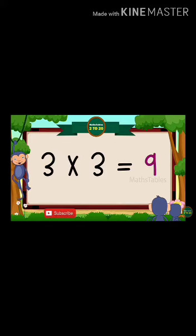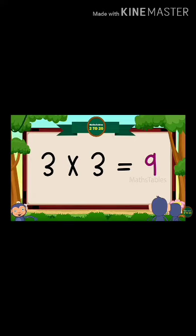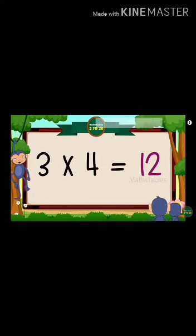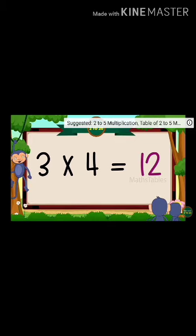Three threes are nine. Three threes are nine. Three fours are twelve. Three fours are twelve.